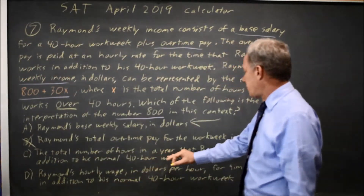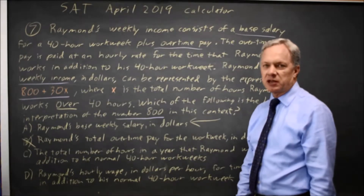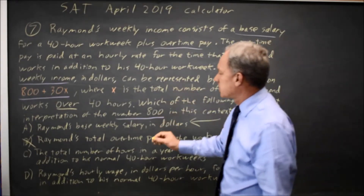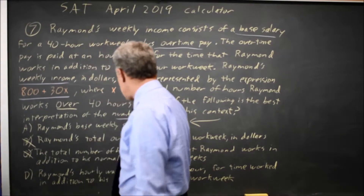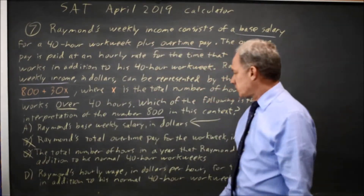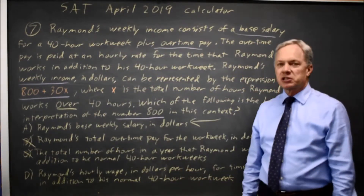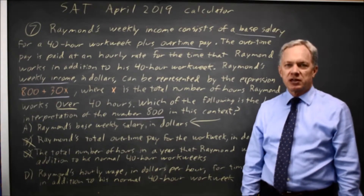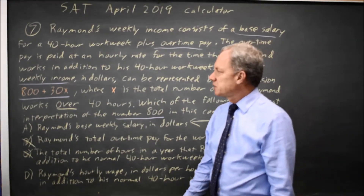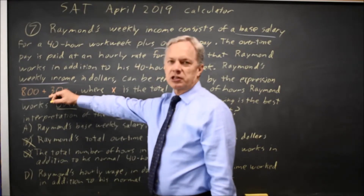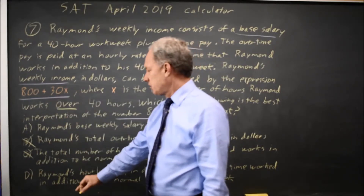Choice C — total number of hours in a year that Raymond works in addition to his normal hours — has no reference to years in the paragraph, so that would not be the correct answer. Choice D — Raymond's hourly wage in dollars per hour for time worked in addition to the 40 hours — the hourly wage for time worked in addition is the slope. Your income goes up by 30 for each additional hour; that's the hourly rate.